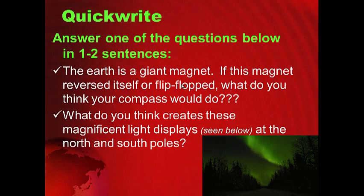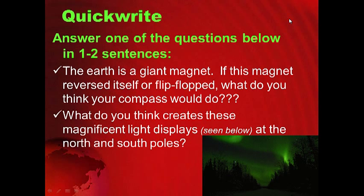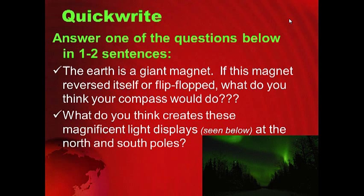For your quick write: the earth is a giant magnet — if this magnet reversed itself or flip-flopped, what do you think your compass would do? And what do you think creates those magnificent light displays seen at the north and south poles? Go ahead and pause this for your five points.